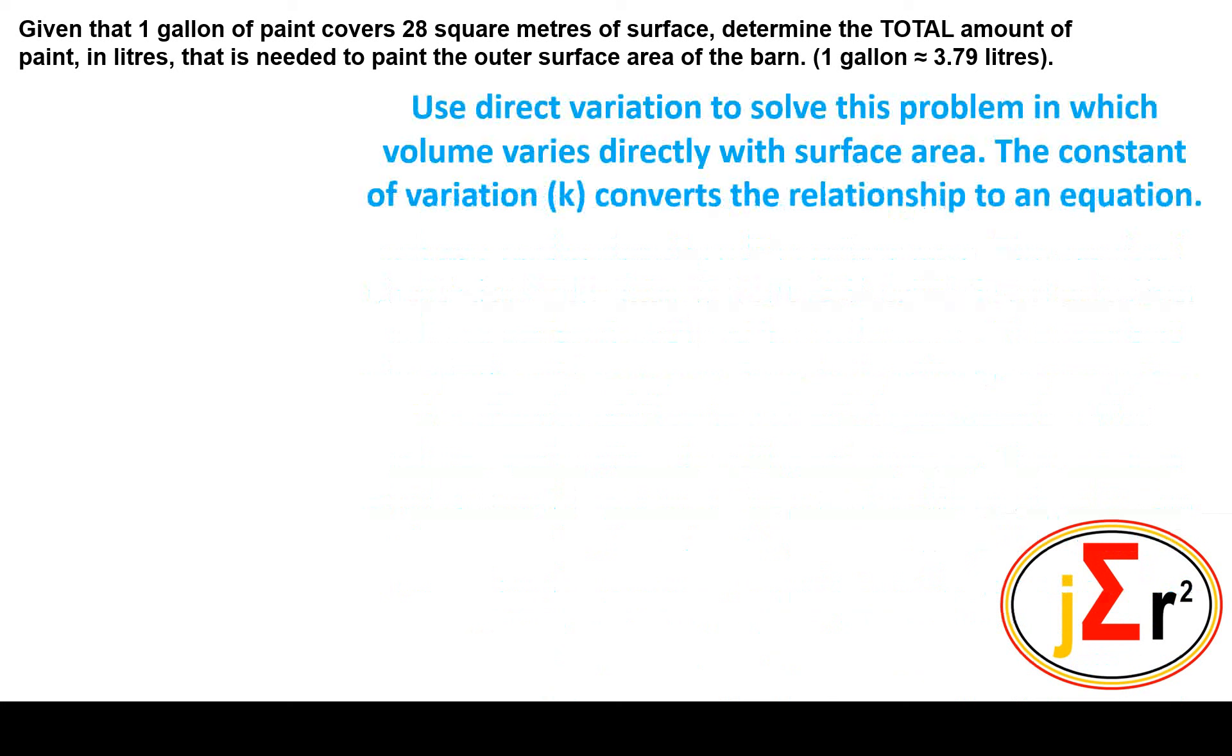Use direct variation to solve this problem in which volume varies directly with surface area. The constant of variation k converts the relationship to an equation.